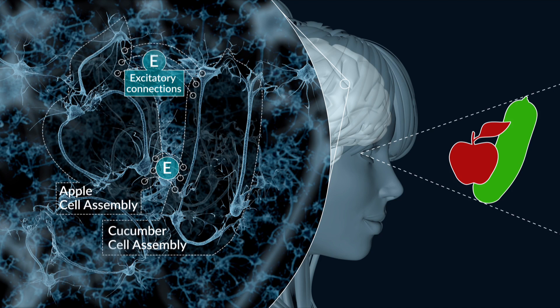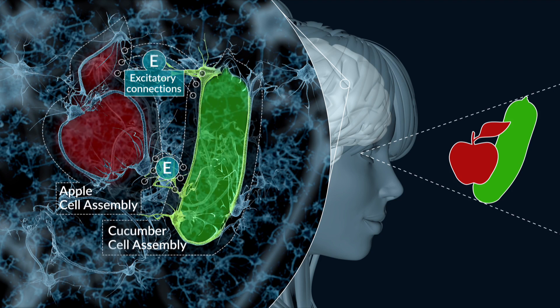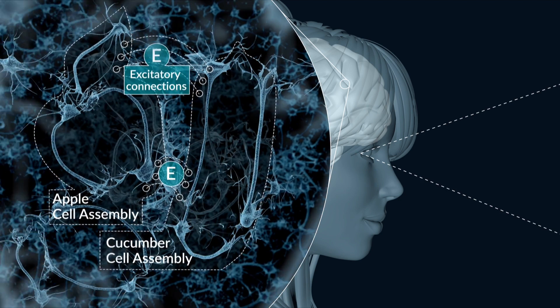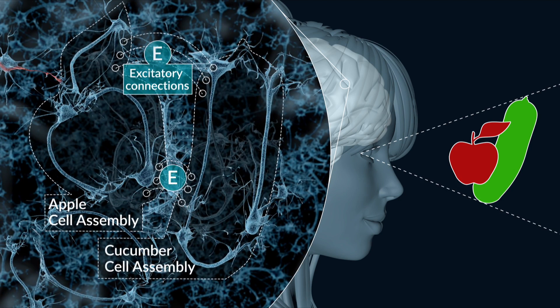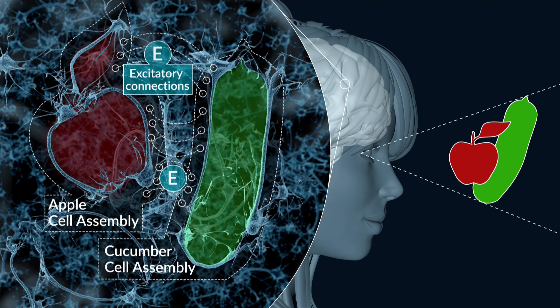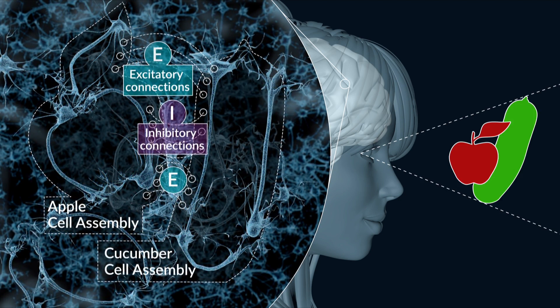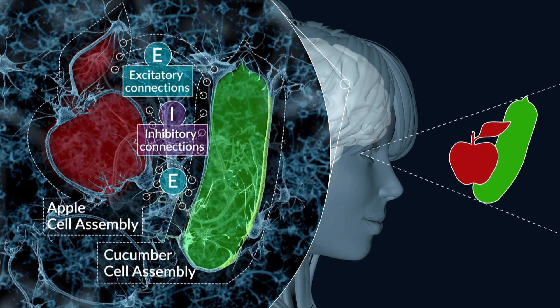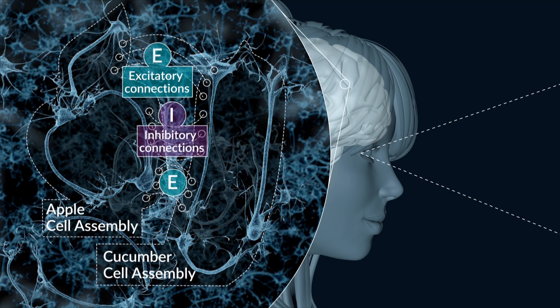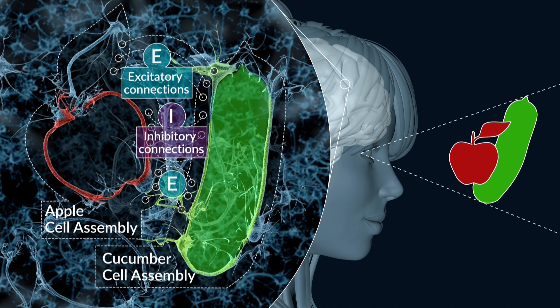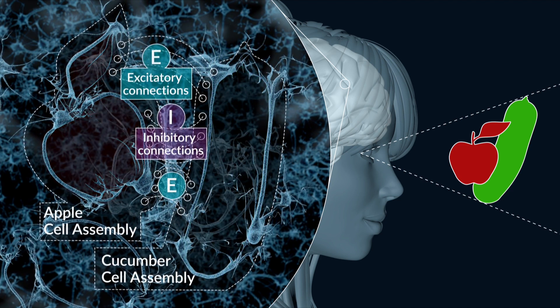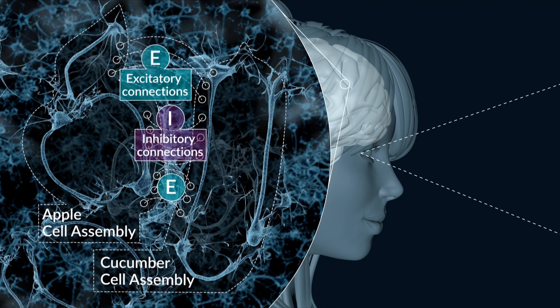It's been suggested that inhibitory plasticity may play a critical role. The idea being that when excitatory connections are strengthened during memory formation, inhibitory connections are also strengthened after a short time delay to form inhibitory replicas of memories, which we describe as anti-memories.